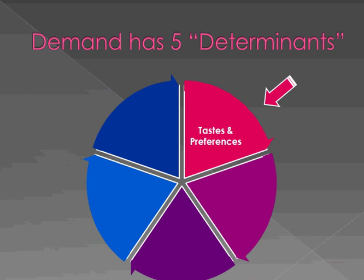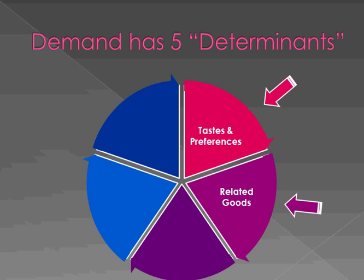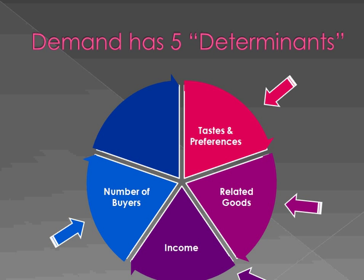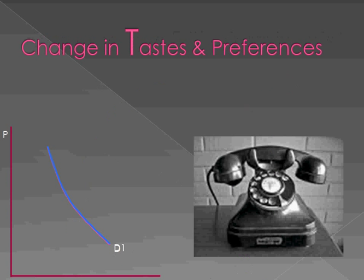The five determinants are taste and preferences, related goods and services like substitutes and complements, income, number of buyers, and of course consumer expectations.